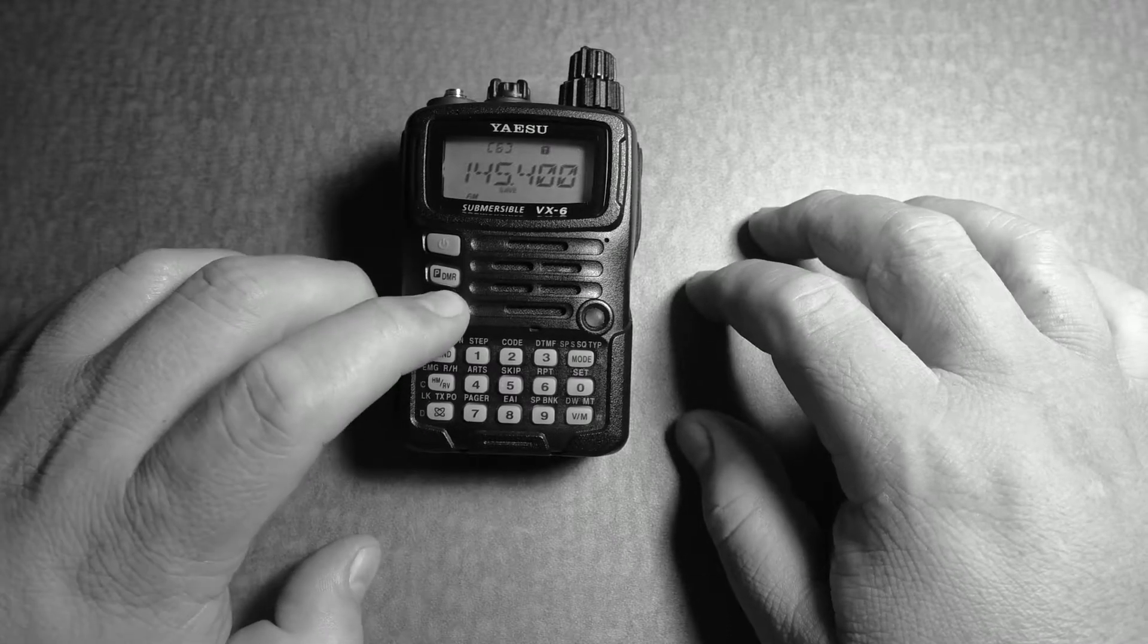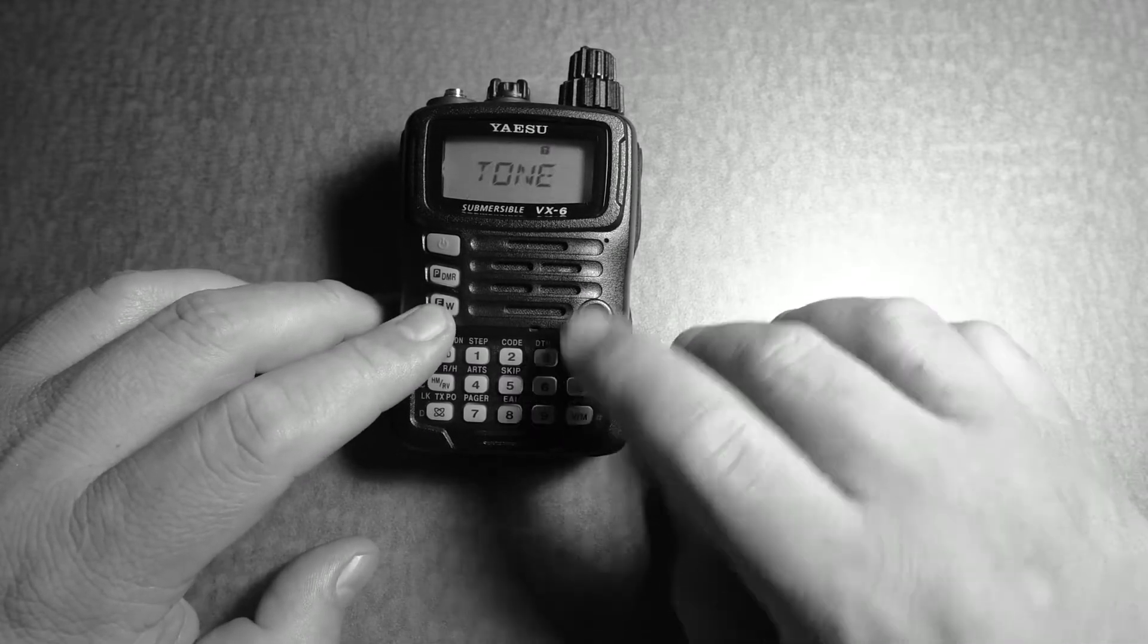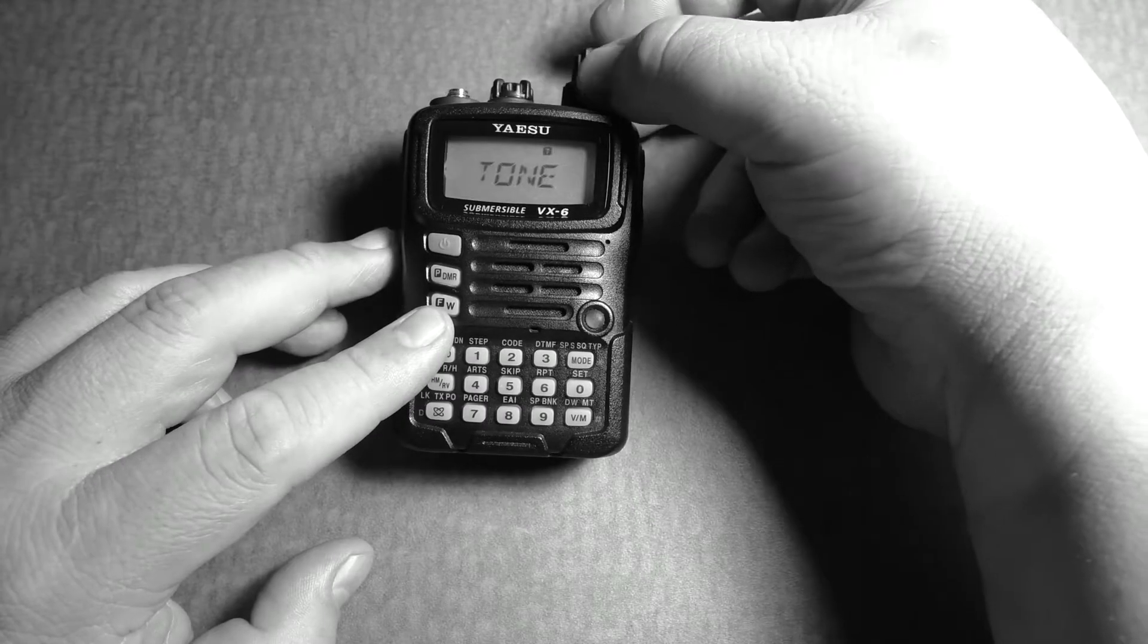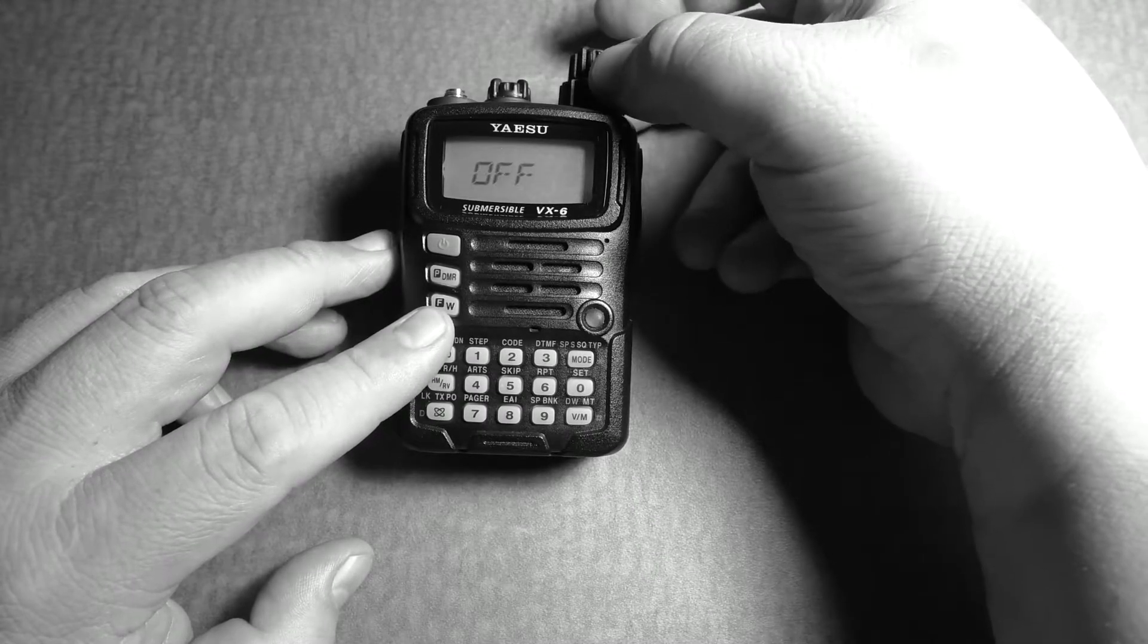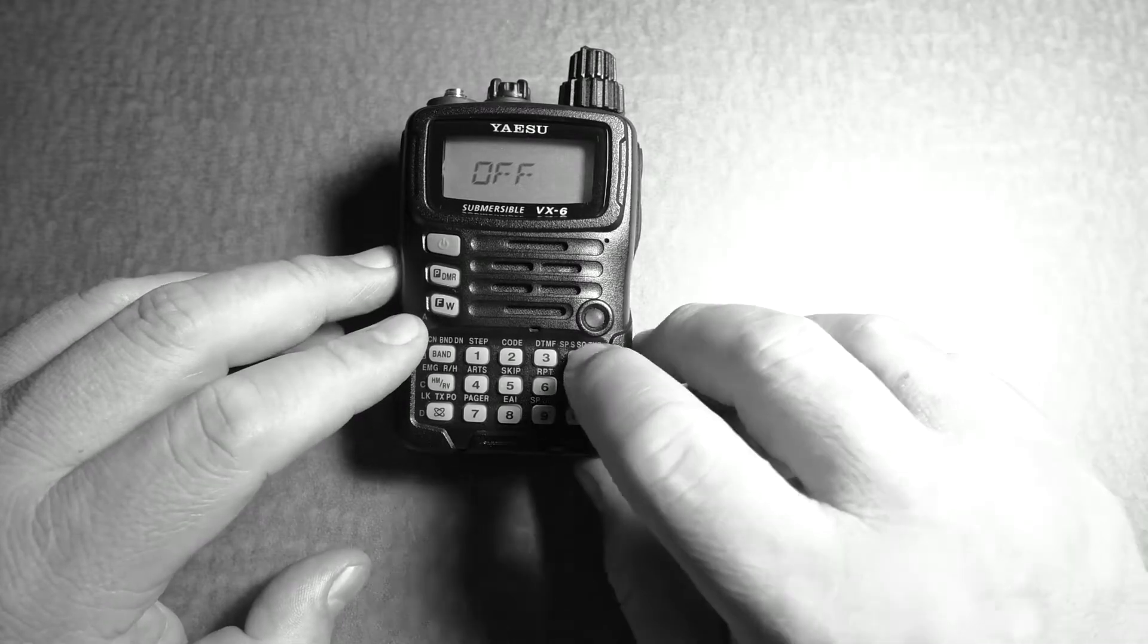We press the F key, then mode. And it says tone, or it might say TSQ or DS or something else. Let's just turn it off. Press mode.